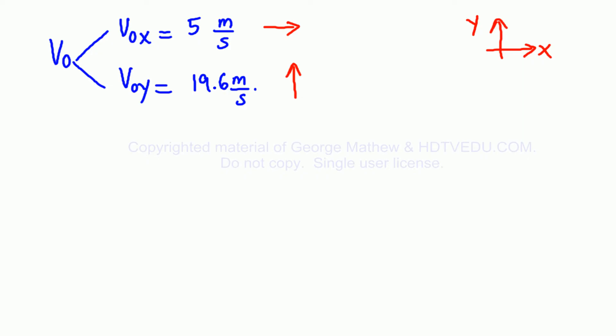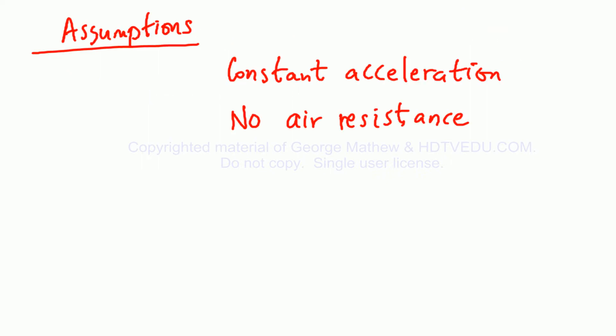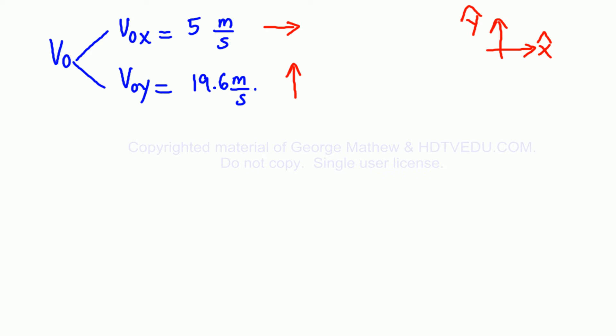Let us define positive x and positive y. x-hat gives you the direction, y-hat gives you the direction. Assume constant acceleration and no air resistance. The horizontal component is 5 meters per second and the vertical component is 19.6 meters per second. Horizontally, there is no acceleration. Vertically, there is the acceleration of gravity pointing down.